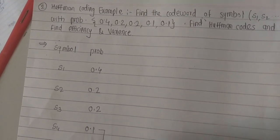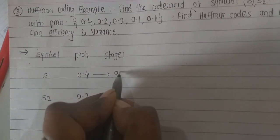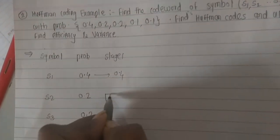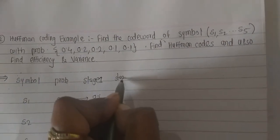In the first stage, combine the last two probabilities 0.1 and 0.1. Assign 0 to the first and 1 to the second. 0.1 plus 0.1 equals 0.2. We already have 0.2 for s2 and 0.2 for s3, so place this combined 0.2 at its highest priority position. In stage 1, 0.4 stays as is, 0.2 moves to the lower level, and the new 0.2 is placed accordingly.